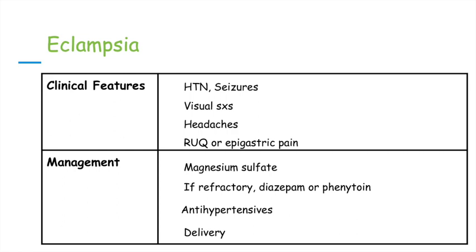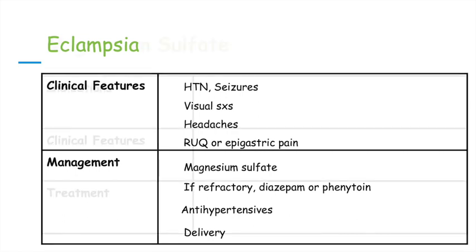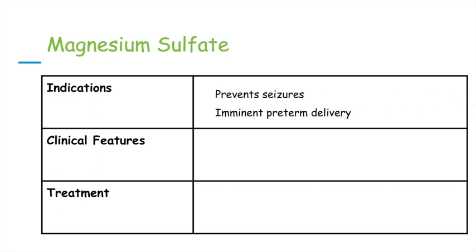Magnesium sulfate was mentioned quite a bit in the management of preeclampsia and eclampsia. Indications include prevention of eclampsia and management of imminent preterm delivery. It is given to mothers who will have preterm delivery because it lowers the risk of cerebral palsy in premature infants. It's important to note that magnesium is cleared by the kidneys, so patients with preexisting kidney problems or elevated creatinine may need a lower dose due to increased risk of magnesium toxicity.